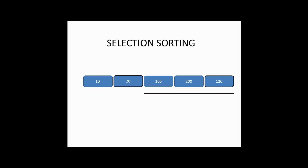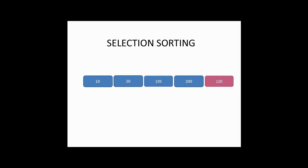Now 105, 220 — these are the three elements remaining in our list which are unordered. The smallest element is 105, between 105, 200, and 120. So there is no need to swap its position with another element, as our pointer is already on that position.